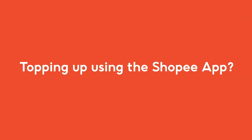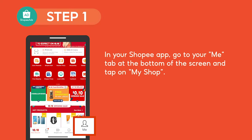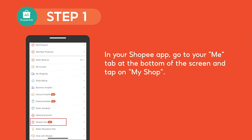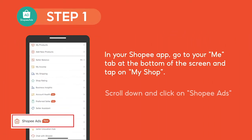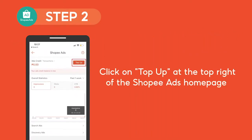If you're topping up via the Shopee app, go to the Me tab at the bottom of the screen and tap on My Shop at the top left of the page. Scroll down and click on Shopee Ads. Then click on Top Up at the top right of the Shopee Ads homepage.